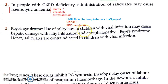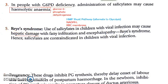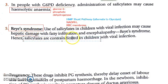Coming to Reye's syndrome — aspirin should not be given to children under 12 years. Reye's syndrome is actually an encephalopathy. In children affected with a viral disease, there can be hepatic damage. Even if they are not infected with a virus, you should not give aspirin to children. Since aspirin has been stopped in children, Reye's syndrome has drastically come down. Salicylates are contraindicated in children.